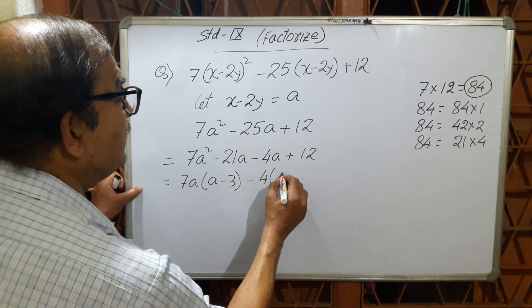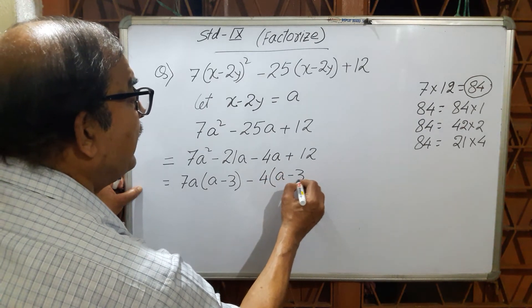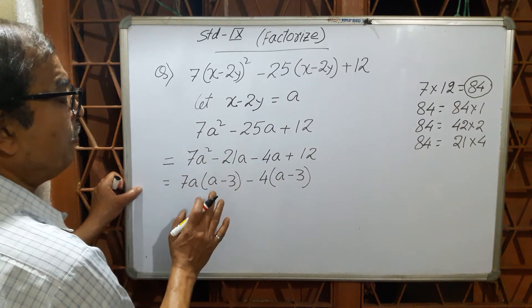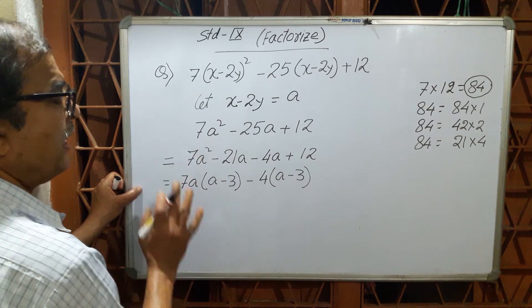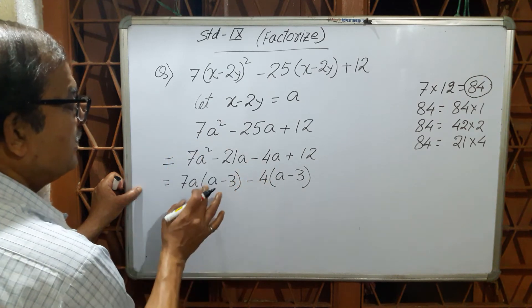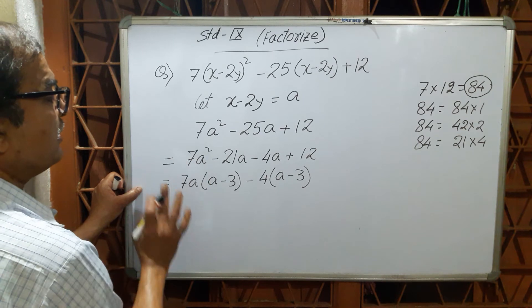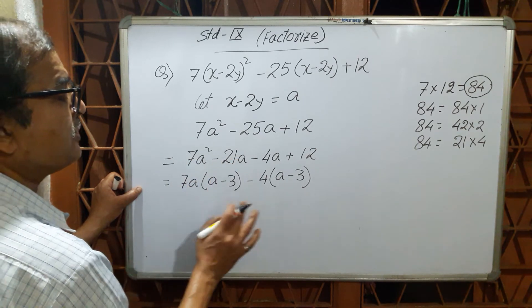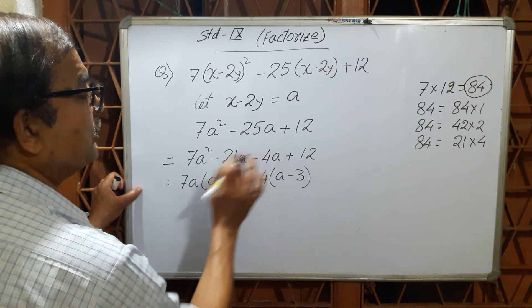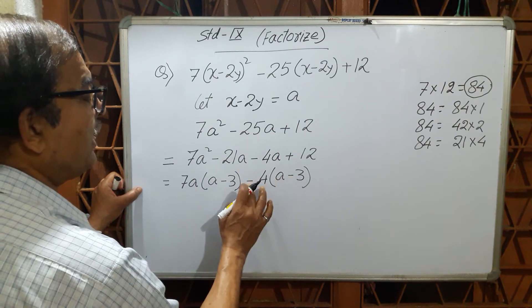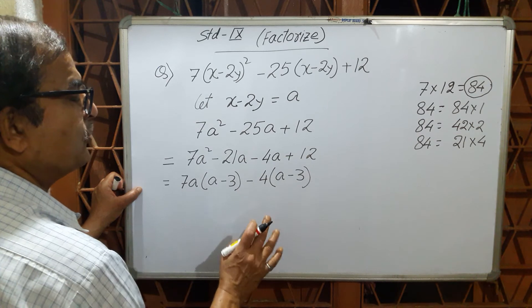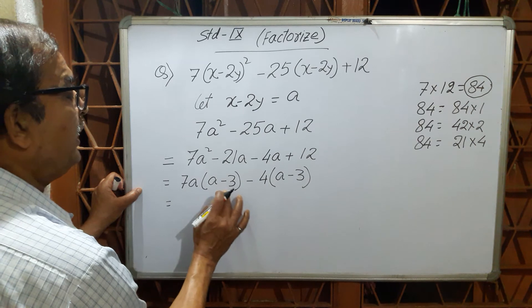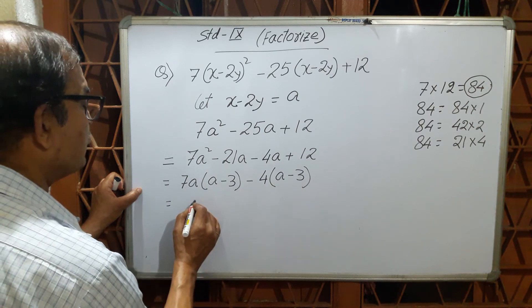That is a minus 3. Subsequently the new line should be satisfied by the previous line. 7a into a: 7a² is matching. Minus 3 into 7a: 21a is matching. Minus 4 into a: minus 4a, see here. And minus 3 into minus 4 equal to plus 12. So this breakup is 100% right. Now you see a minus 3 is the most common in two figures, so a minus 3 you write here, and rest is 7a minus 4.